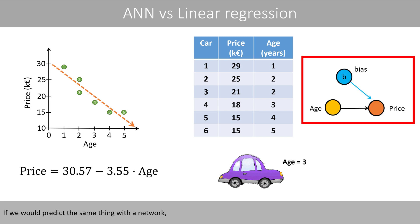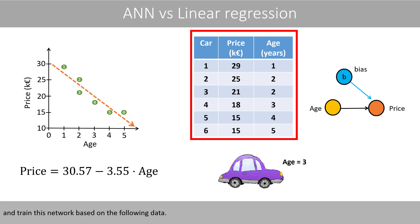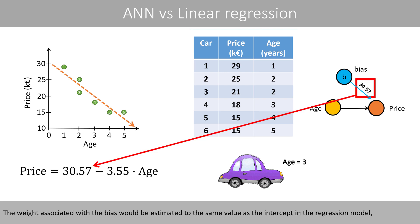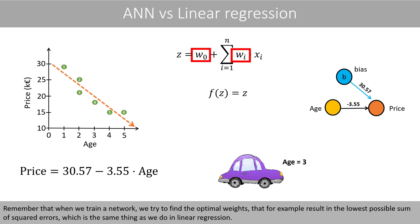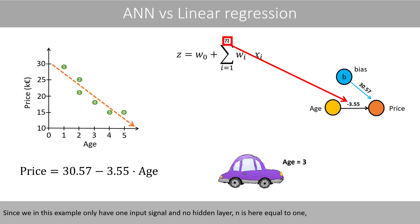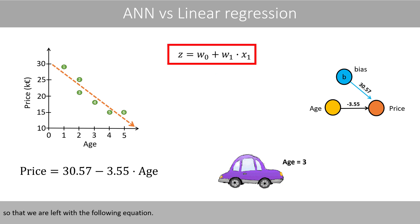If we would predict the same thing with a network, we would use a network with only one input node and one output node, and train this network based on the same data. The weight associated with the bias would be estimated to the same value as the intercept in the regression model, whereas this weight will correspond to the slope of the regression line. When we train a network, we try to find the optimal weights that result in the lowest possible sum of squared errors, which is the same thing as we do in linear regression. Since we have only one input signal and no hidden layer, n is here equal to 1.